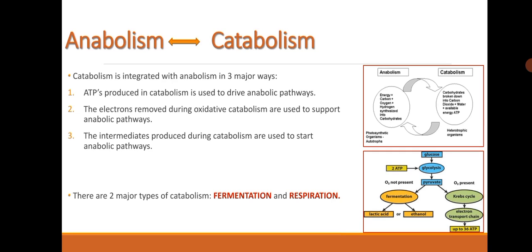Catabolism is integrated with anabolism in three major ways. ATP produced in catabolism is used to drive anabolic pathways. The electrons removed during oxidative catabolism are used to support anabolic pathways. And the intermediates produced during catabolism are used to start anabolic pathways.